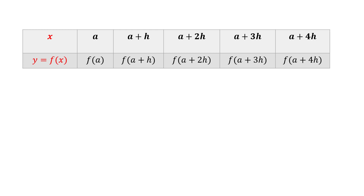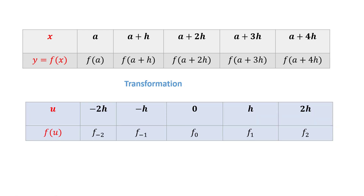We have information in the form of a table with 5 points. The center is at a plus 2h, where h is the equal length of interval. From the transformation, subtracting the center value itself, we get u=0 at center. Then a+3h minus a+2h gives h, a+4h minus a+2h gives 2h, a+h minus a+2h gives minus h, and a minus a+2h gives minus 2h. We call this transformation value u.